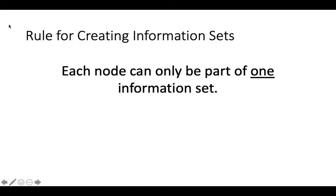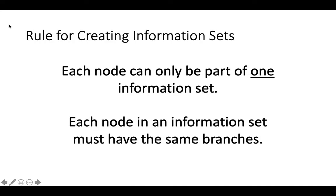When you use information sets to create models of strategic interactions, there are two rules that you need to remember. The first rule is that each node can only be part of one information set. The second rule is that the branches coming out of each node in an information set must be the same. If they are different, then there is a way for the player at that information set to figure out which node he or she is at, and the game would no longer be a game of imperfect information.